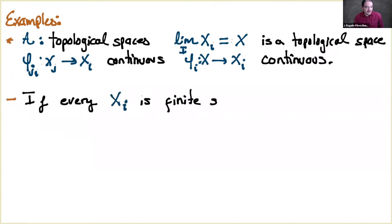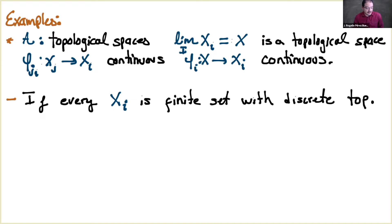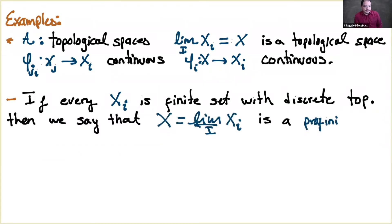If every X_i is a finite set, then we can endow every X_i with a discrete topology, making each X_i a topological space with the discrete topology. In this case, the projective limit X is called a profinite set — it is called profinite because this is the projective limit of finite sets. So it's a short way to say all of that, and this is very important.